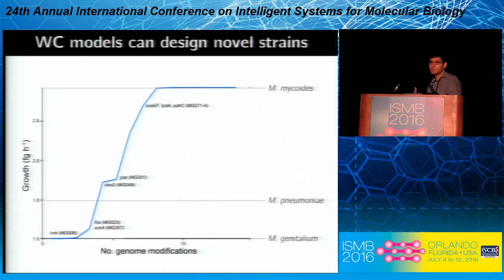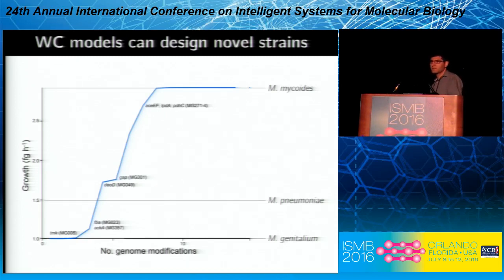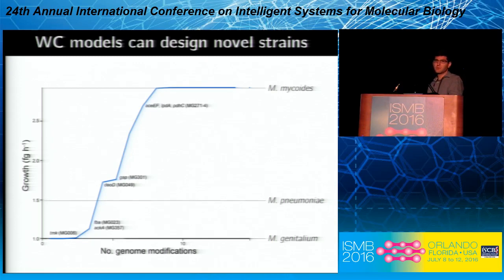We're interested in using wholesale models to guide bioengineering and medicine. This slide illustrates a collaboration with Luis Serrano and Maria Luce Center at the Center for Regulatory Genomics to build a wholesale model of mycoplasma pneumonia, and then use that model to design a faster-growing strain which could be used as a chassis for future bioengineering projects.